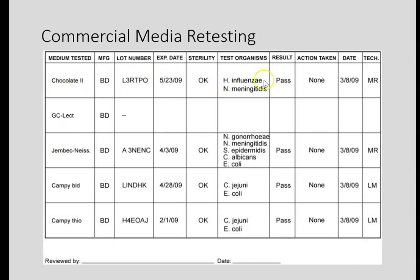For chocolate agar, you have to put Haemophilus influenzae and Neisseria meningitidis on there and make sure they both grow. GC media, which is gonococcus media, and Jembeck, which is also a Neisseria gonococcus medium — you need to check all these things because yeast will sometimes grow on it. Other Neisseria species will also grow on it, but we're specifically looking for Neisseria gonorrhoeae when we're trying to recover.